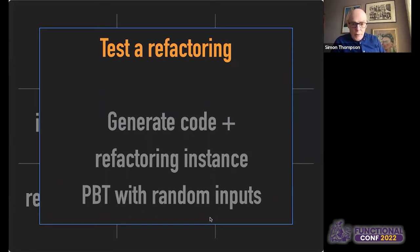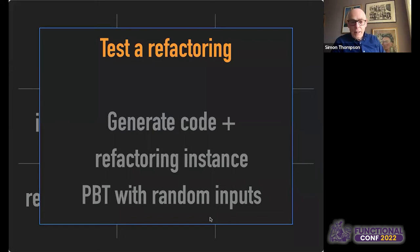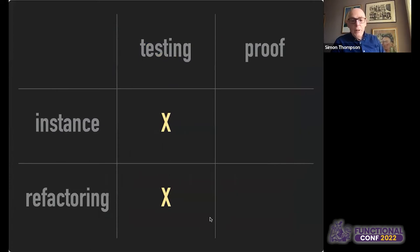In a purely functional world, we can simply check the old code against the new code with randomly generated inputs. This is work I've done with Daniel Horpacsi and colleagues at Eötvös Loránd University in Hungary. It's work that can be applied in Haskell or OCaml as well as in the case we were looking at, which was Erlang. On the testing side, we can go from looking at simple instances to looking at all instances of a particular refactoring.